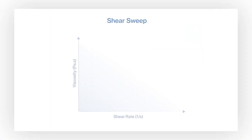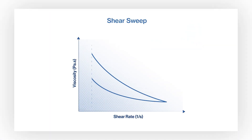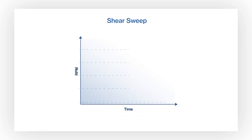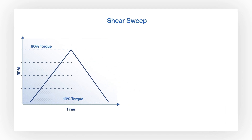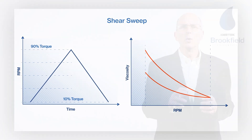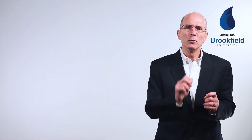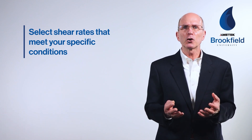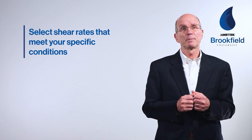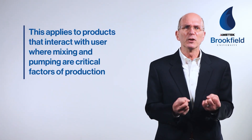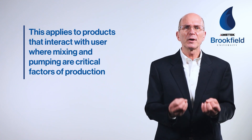To help define the rheological properties of your sample, it's best to perform a shear sweep, ramping up and then back down in speed. This will define your fluid's behavior — whether it is Newtonian or non-Newtonian. Start with a spindle and speed that results in low torque of just above 10%, then increase the speed in steps until you reach about 90% torque, then ramp back down. Four to five speeds are adequate. You can plot viscosity versus RPM to graph the rheogram and select shear rates that match the conditions the sample will be exposed to in use.